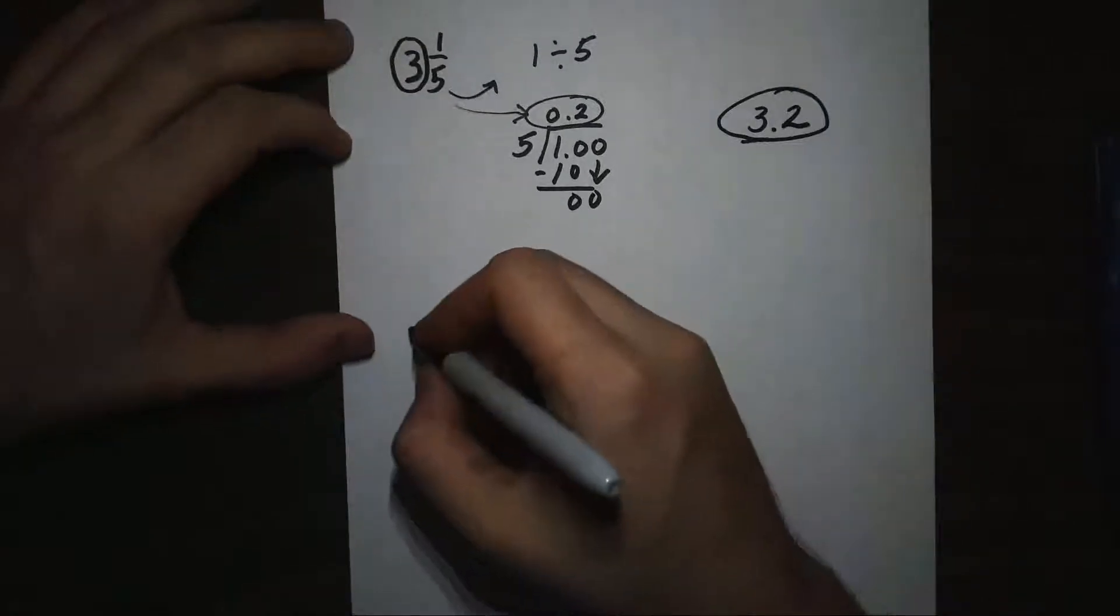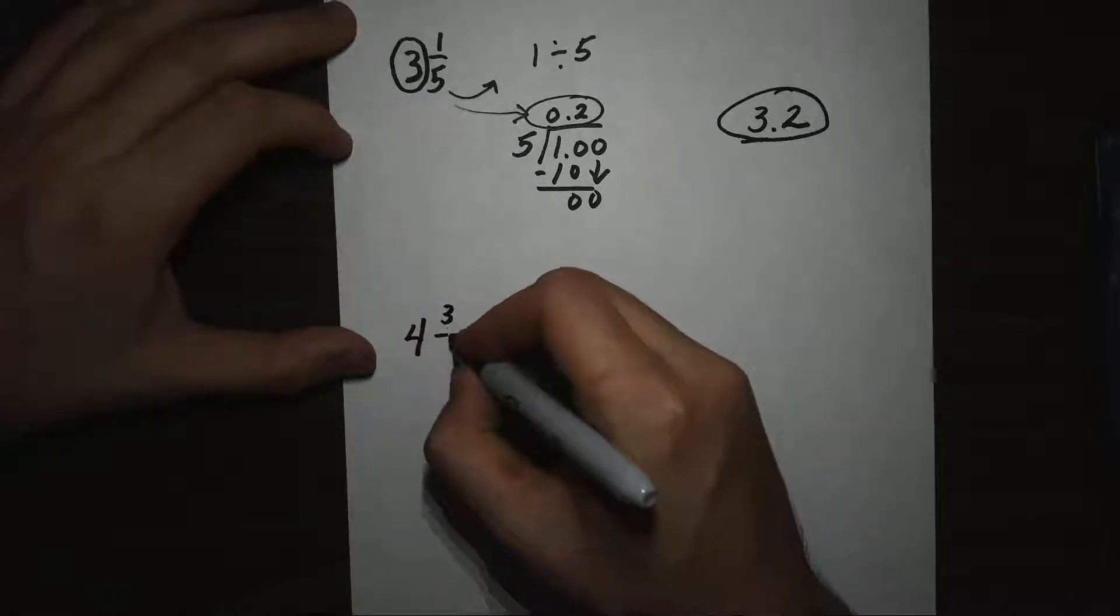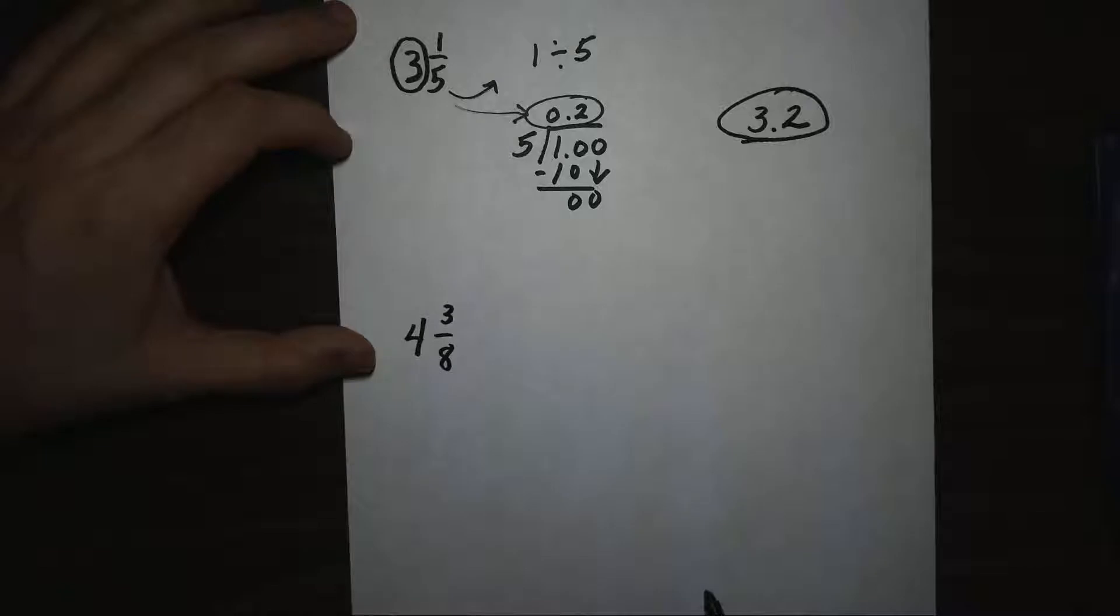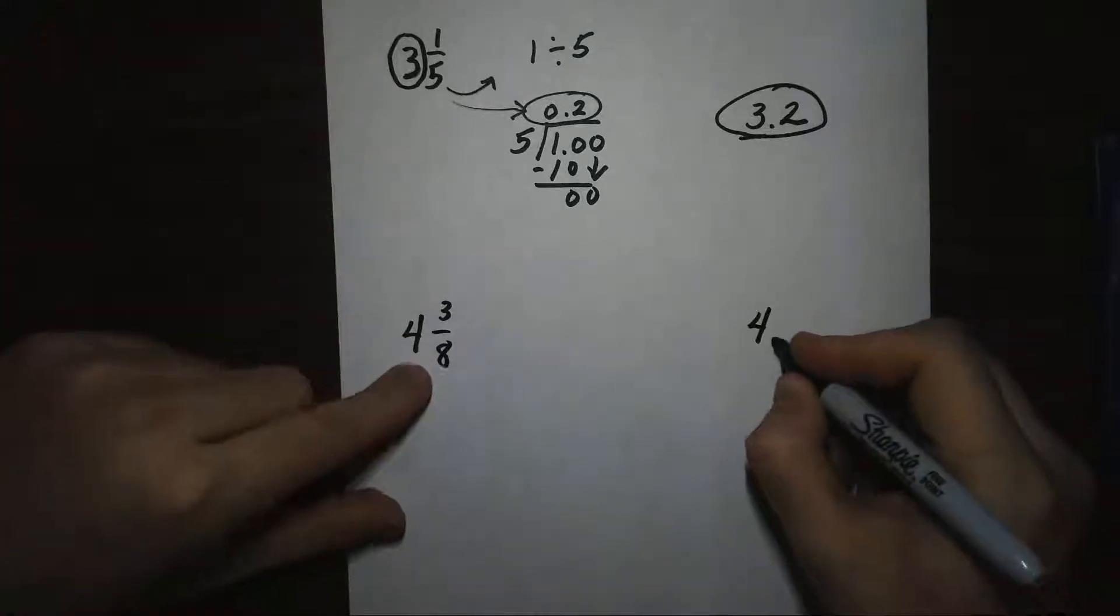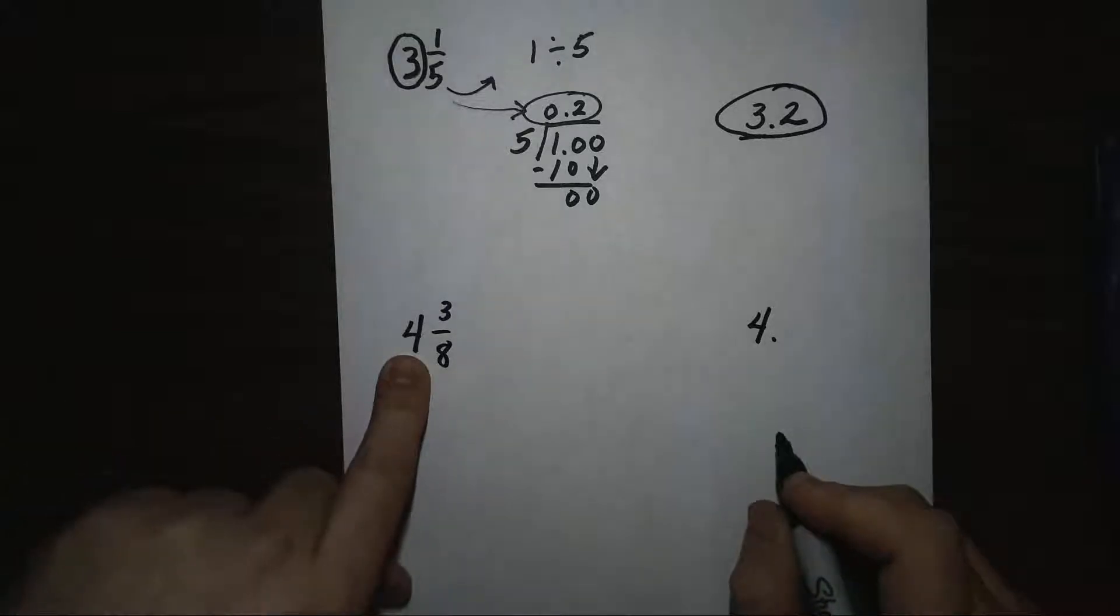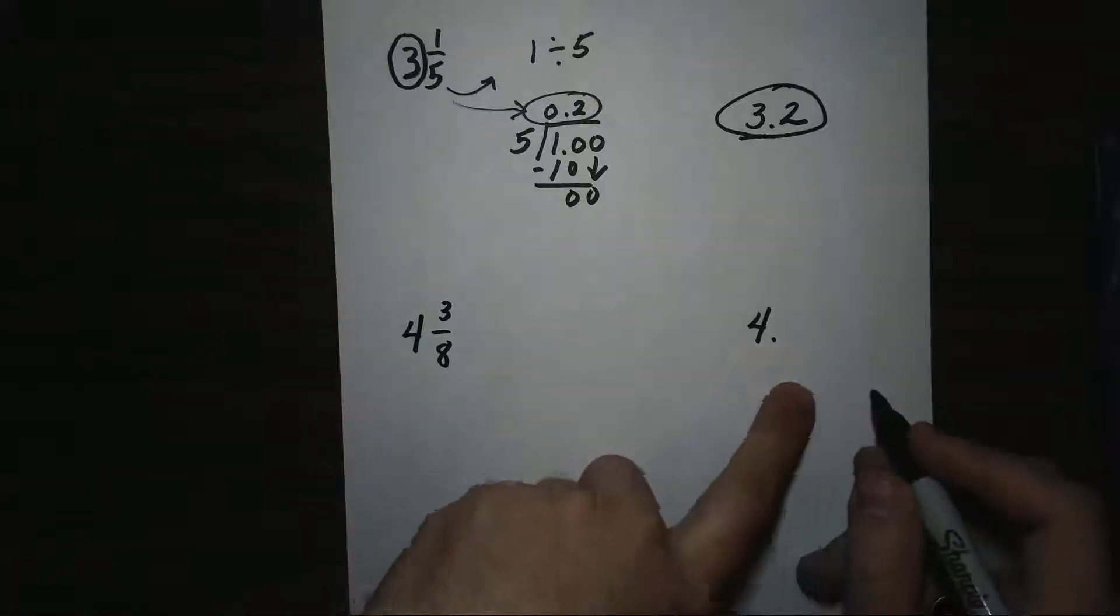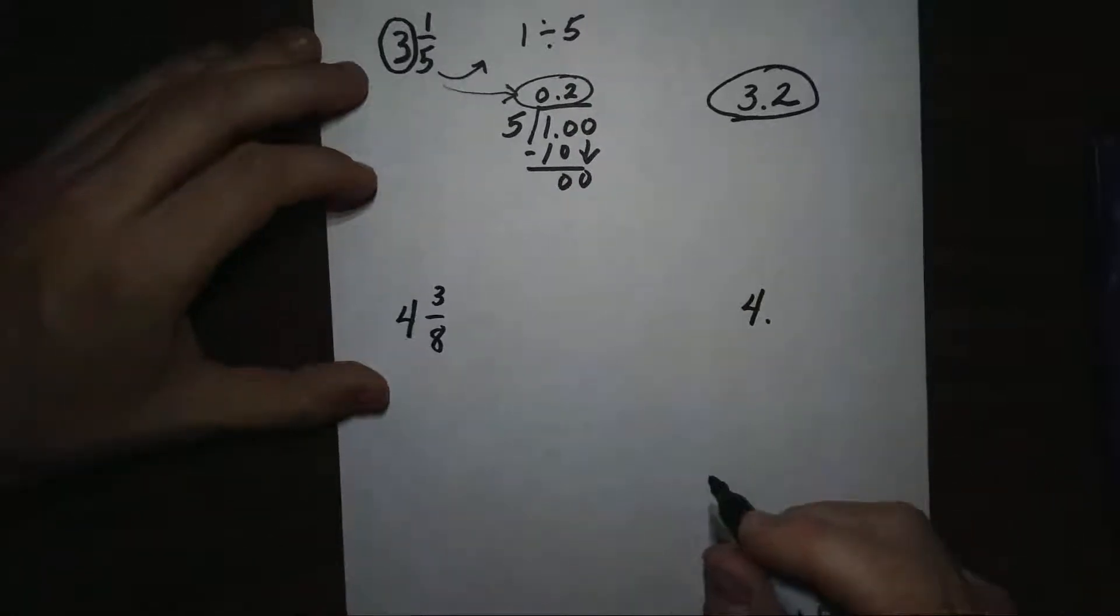Let's look at another example. Let's say we have 4 and 3/8. Again, we know our answer is going to be 4 wholes and then some decimal. So we can go ahead and write down the 4 and a decimal, and then we can just wait and save our fraction part until we've changed it to a decimal.